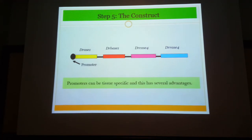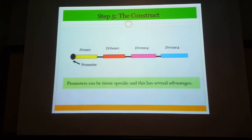Once you have your single gene construct, you need to add a promoter. That promoter, which you fuse to the gene cluster, should be derived from the plant in which you are going to perform the transformation.